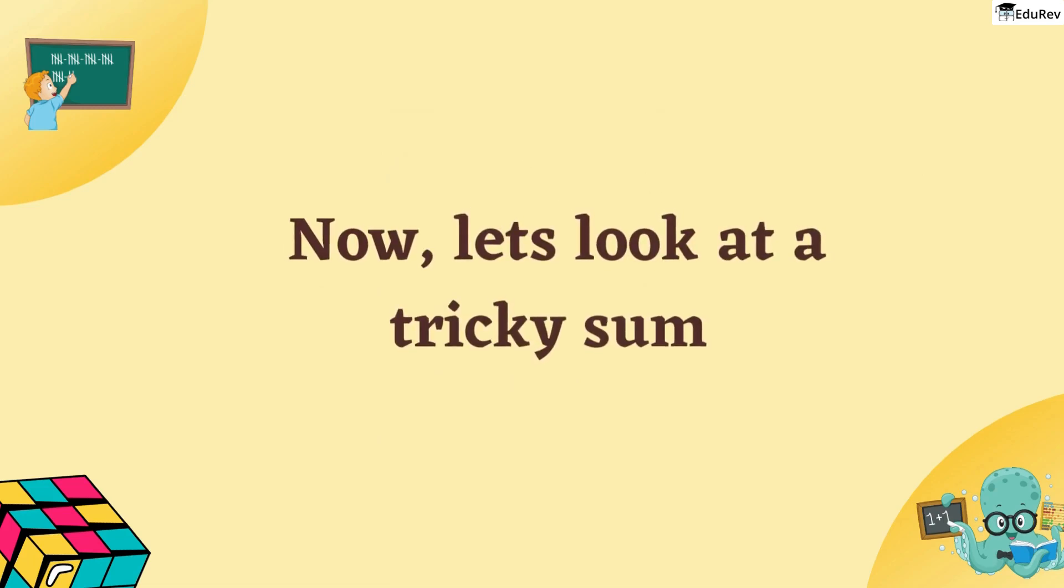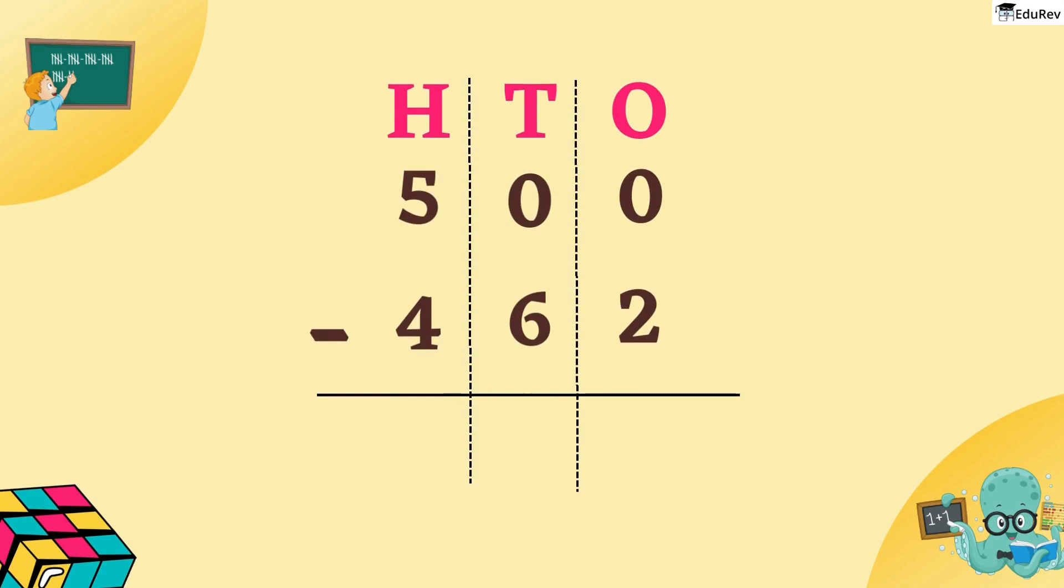Now, let us look at a tricky sum. 500 minus 462. What do we do with so many zeros? Don't worry. Let us understand together. Look at the 1s place first.